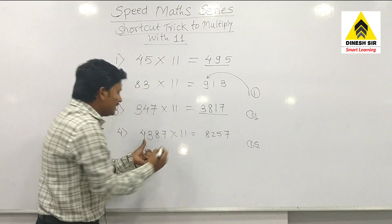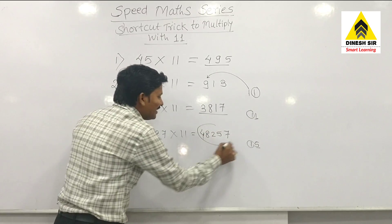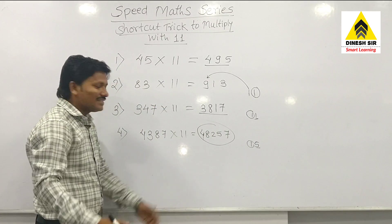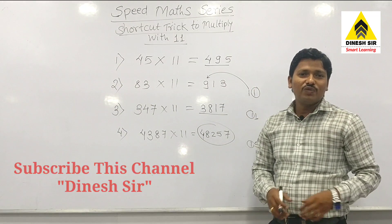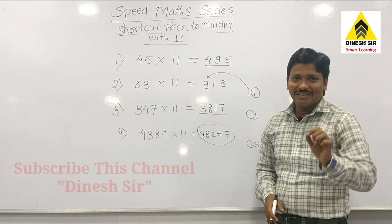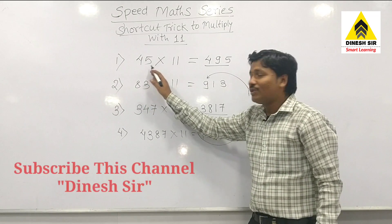3 and 4 become 7, 7 and 1 carry is 8, and finally 4 here. So this is the final answer. So friends, you have seen that multiplying with 11 is very easy.